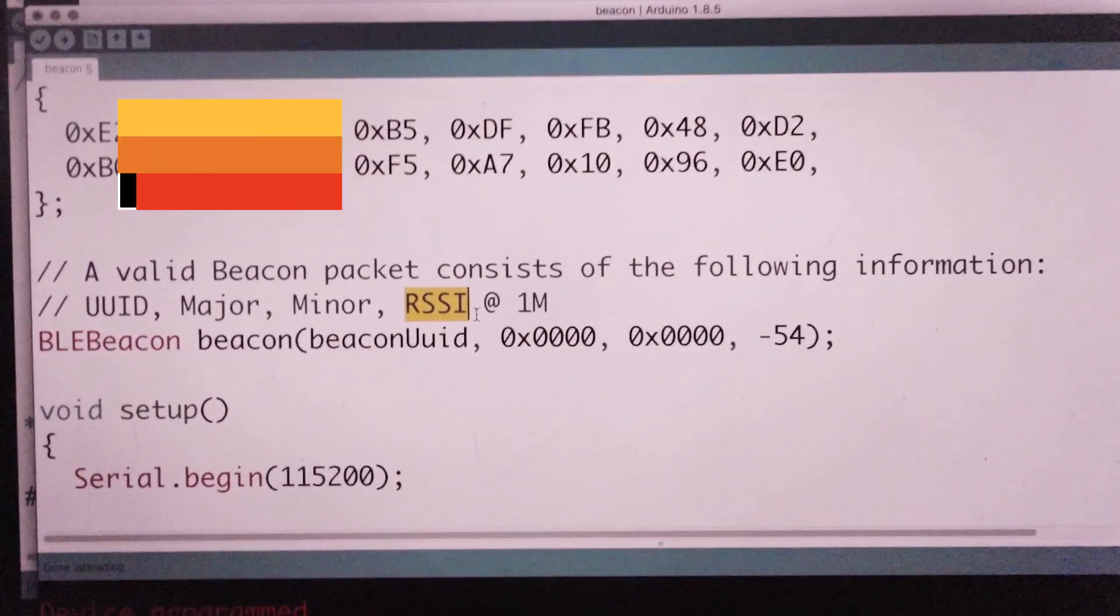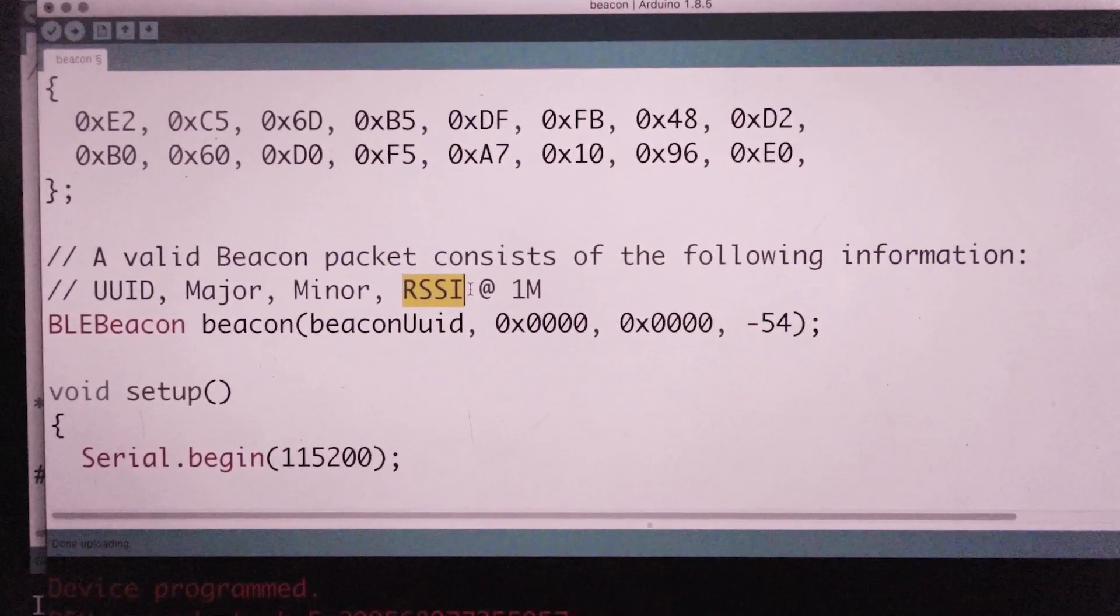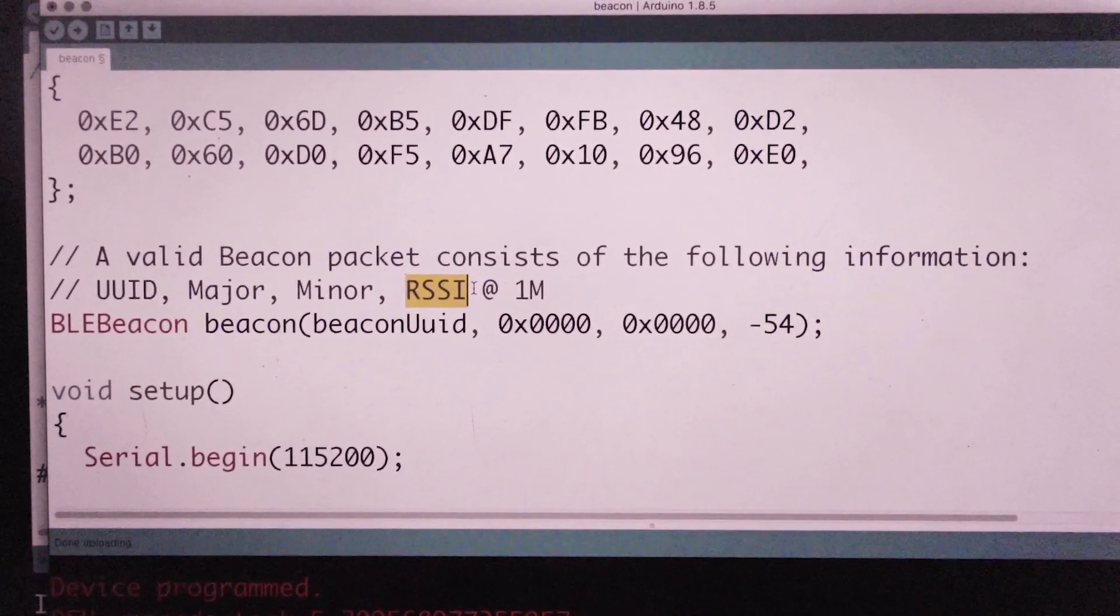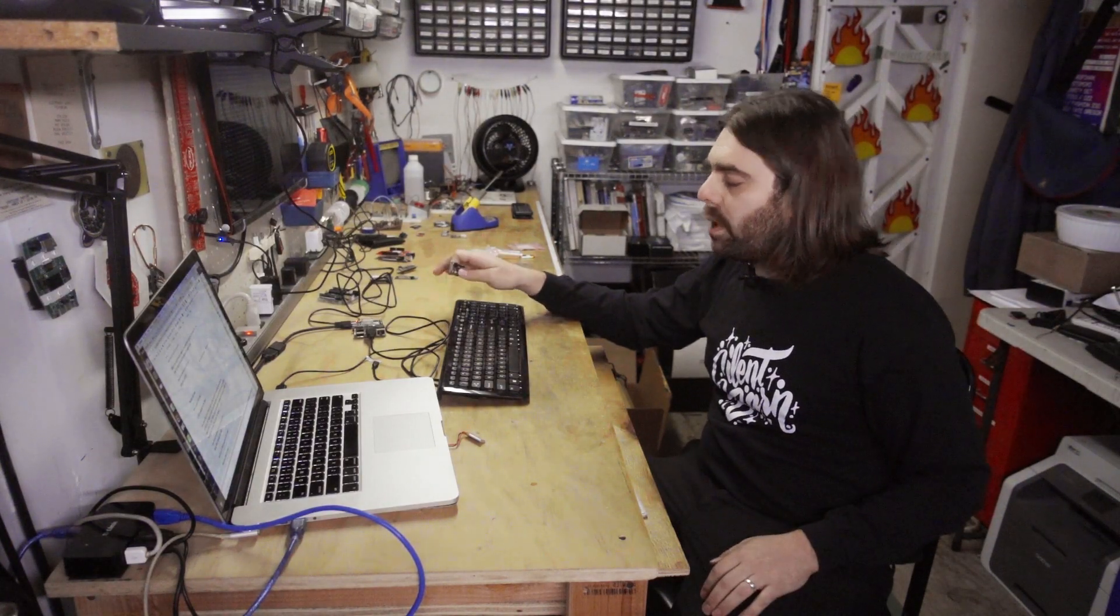This is my received signal strength indicator. So I'm going to need to set up a Bluetooth receiver and take a look at the RSSI value to determine how far away it is from the receiver. Theoretically, I should be able to find a threshold number where this is right under the doorway and trigger the display when it hits that decibel level.